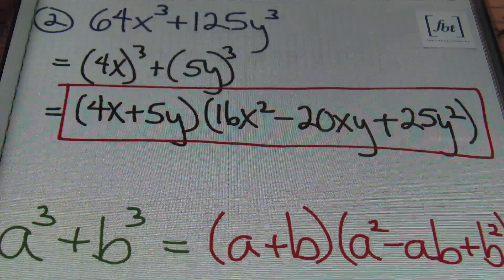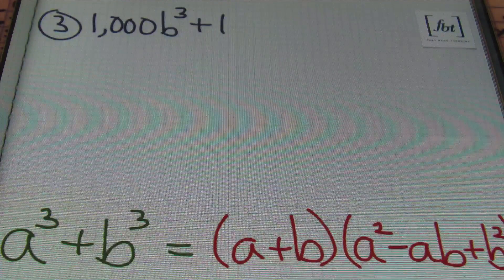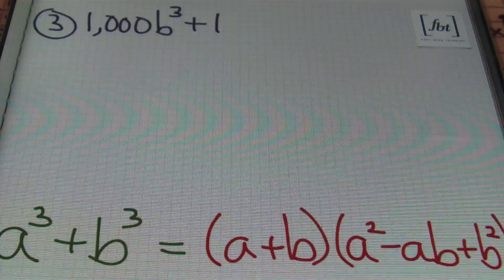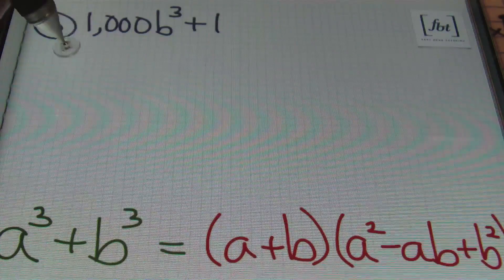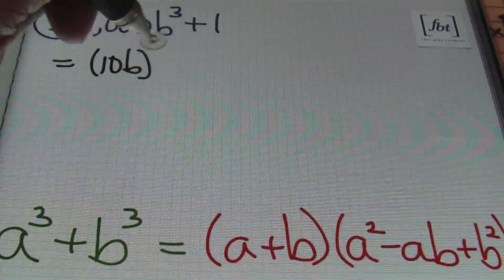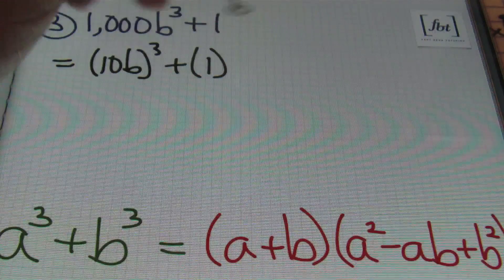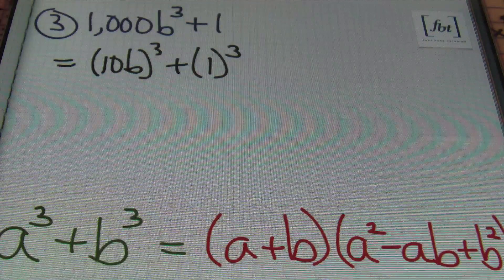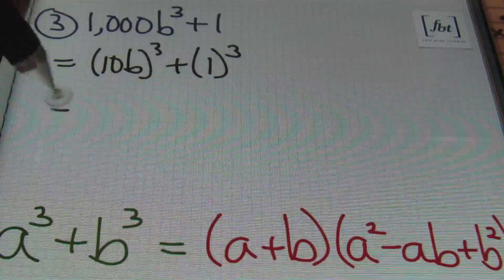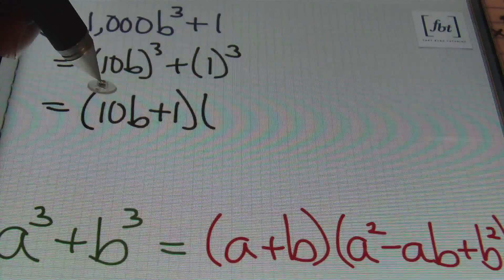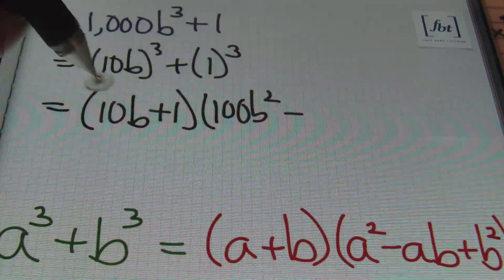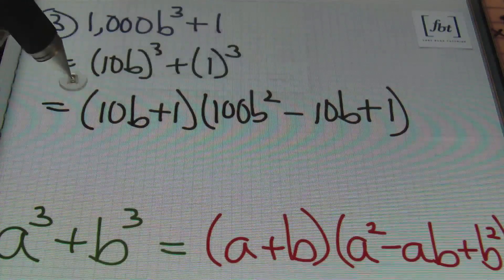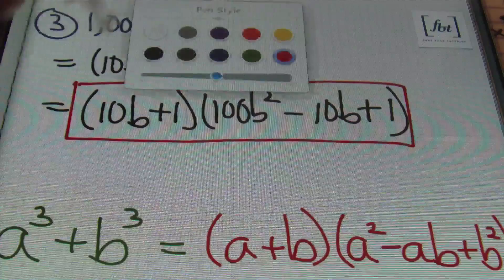Problem number three: 1000b cubed plus 1. We rewrite 1000b³ as (10b)³, and 1 is a perfect cube — 1³ = 1. So a = 10b and b = 1. Plugging into the formula: (10b + 1)(100b² − 10b + 1). That's the answer.